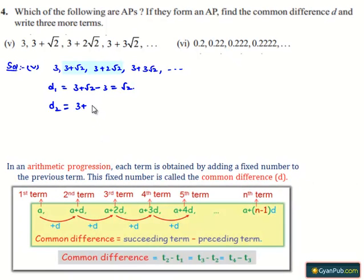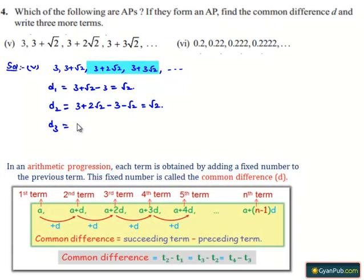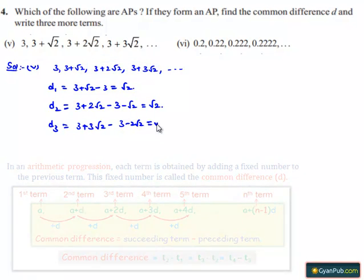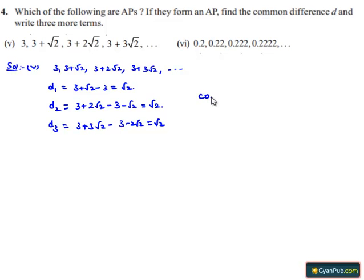d2 is the difference between the third and second term, that is (3 + 2√2) − (3 + √2), which is nothing but root 2. And d3 is the difference between the fourth and third term, that is (3 + 3√2) − (3 + 2√2), which is nothing but root 2. We got the common difference as the same between consecutive terms, that is root 2.